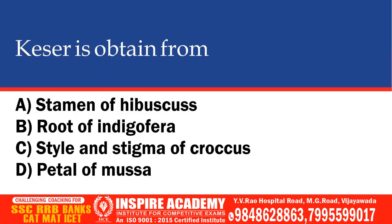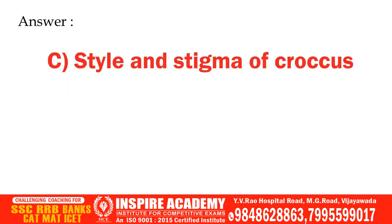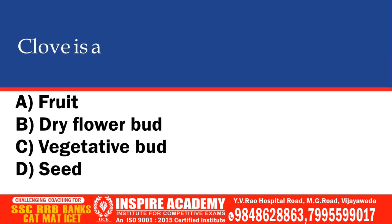Kesar is obtained from which part of plant? Options: Stamen of Hibiscus, Root of Indigofera, Style and Stigma of Crocus, Petal of Musa. The correct option is Style and Stigma of Crocus.